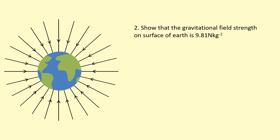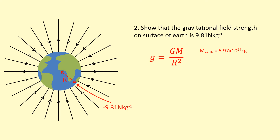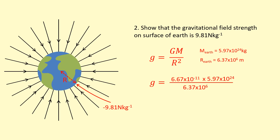In this question I want to show that the gravitational field strength on the surface of the Earth is 9.81 N/kg. I can use the gravitational field strength equation, where the distance r from the center is actually the radius of the planet itself, since I'm interested in the field strength at the surface — so I use capital R for the radius of the planet. I also need the mass of the Earth and the radius of the Earth from my data sheet. Putting these numbers in — gravitational constant G times the mass of the Earth, divided by the Earth's radius squared — gives us 9.813 N/kg, which rounds to 9.81.